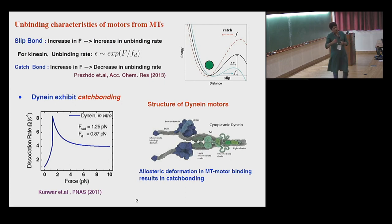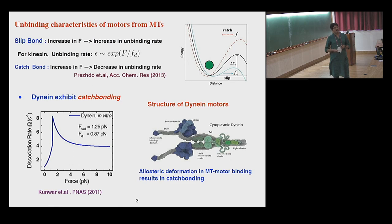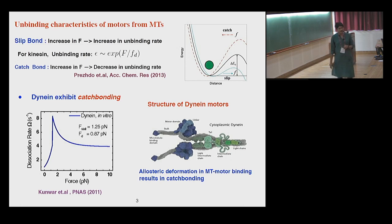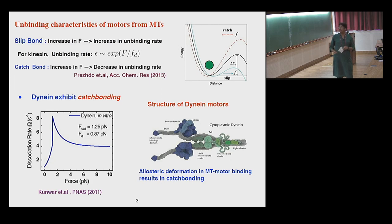If there is a force acting on these motor proteins, how does the unbinding rate change as a function of force? One can think of the bound state as being at the minimum of some potential, and the unbinding rates scale as the exponential of the barrier height of this potential. When you exert a force on these motors, one thing that can happen is that the force effectively leads to an increase in the height of the barrier, which manifests as an increase in the unbinding rates. This is what kinesin motors display — the slip bond characteristic — where the unbinding rate exponentially increases as a function of force.